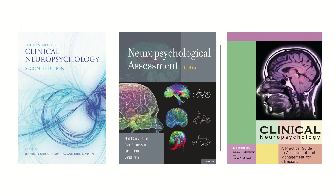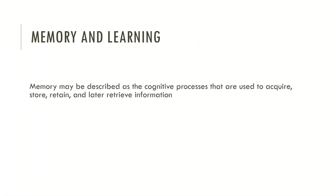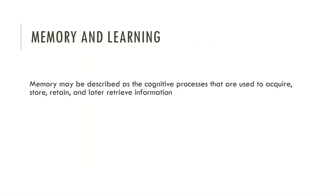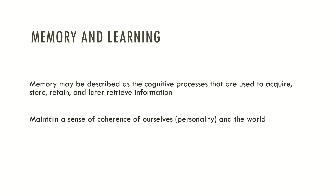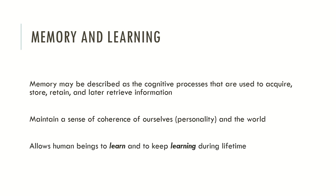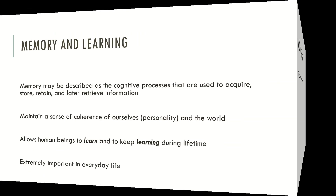Now let's take a brief look at memory and learning. Memory may be described as the cognitive processes that are used to acquire, store, retain and later retrieve information. Typically, memory helps us to maintain a sense of coherence of ourselves and the world around us, allows human beings to learn and to keep learning during a lifetime, and memory and learning is extremely important in everyday life.